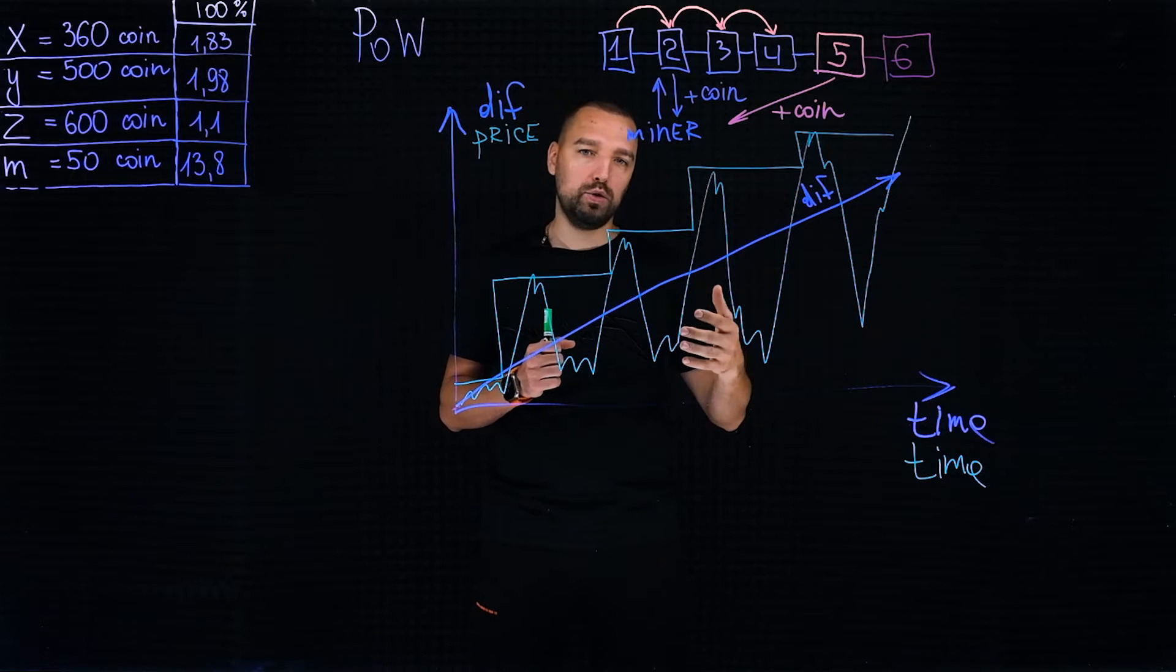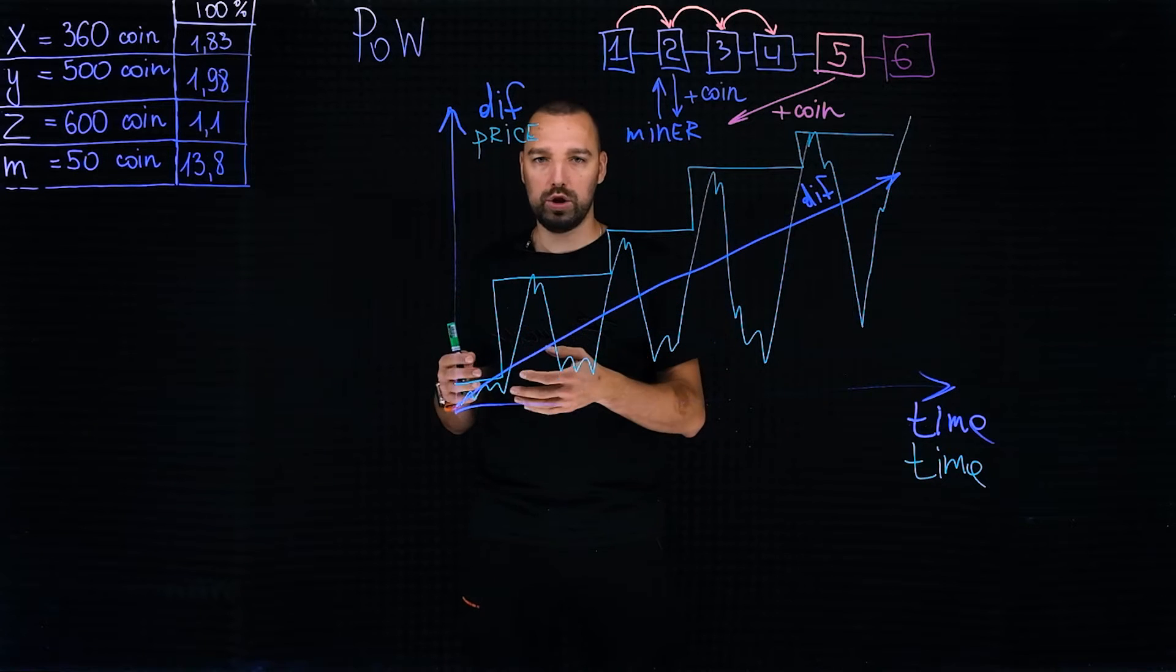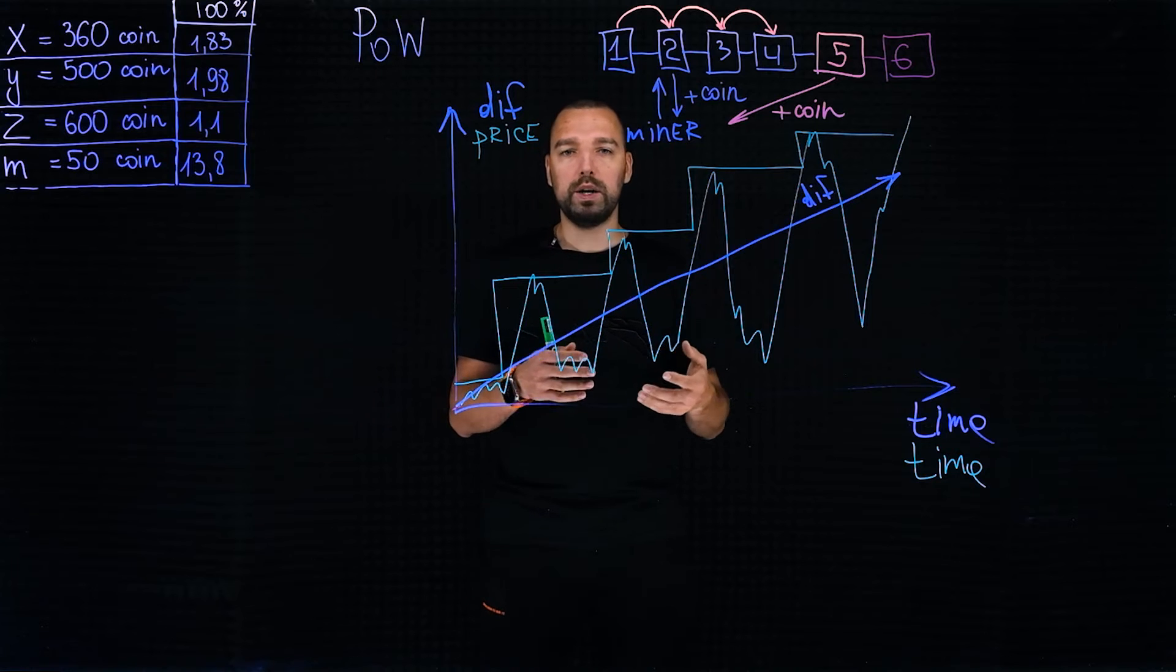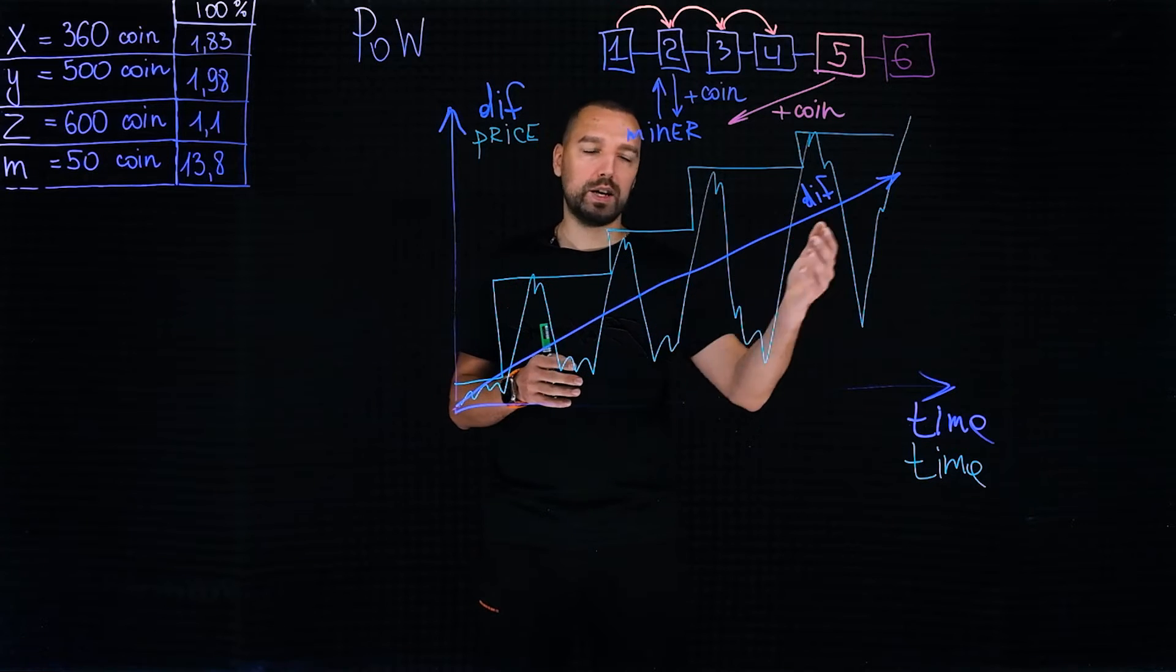The complexity that we indicated on the graph is growing incredibly constantly. Based on this, each subsequent action for the miner becomes more expensive than the previous one, and in order for him to pay for his actions, the value of the coin must grow with difficulty.